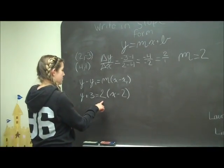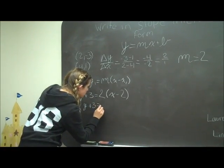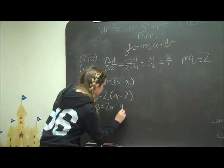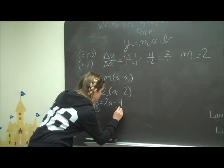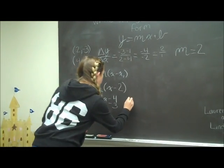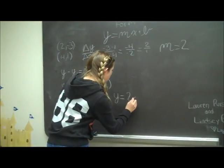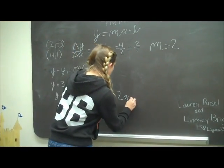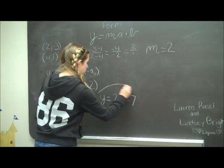Then you distribute 2 to x and -2, so it's y plus 3 equals 2x minus 4. Then you subtract 3, so you end up with y equals 2x minus 7, and that's in slope-intercept form.